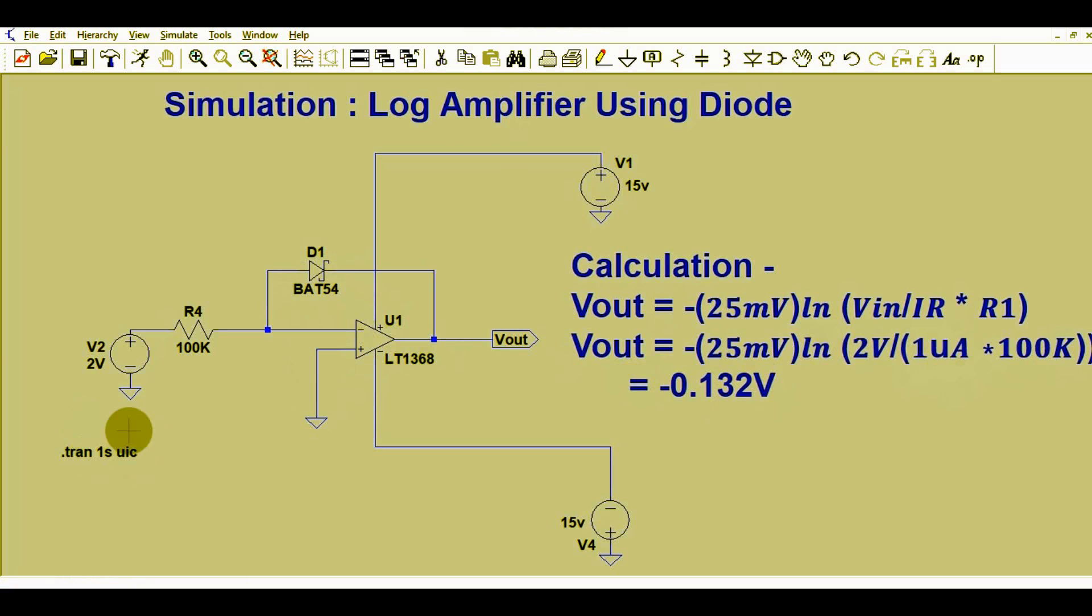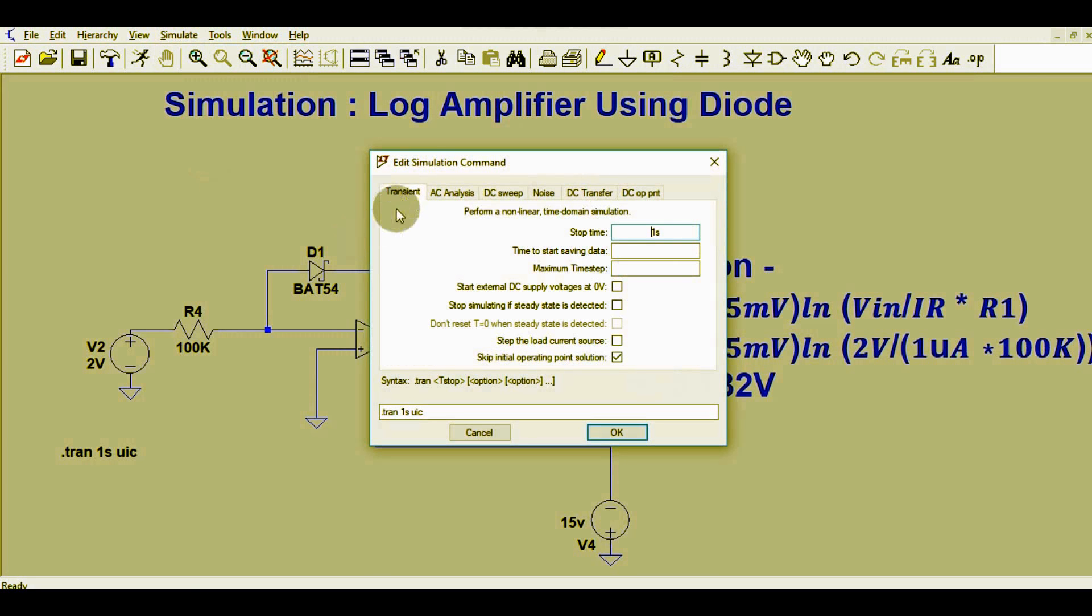What is the setting for transient analysis? You have to go to Simulate option, then go to Edit Simulation Command. Right now I am doing transient analysis, so you have to click here. This simulation run time stop time is 1 second.